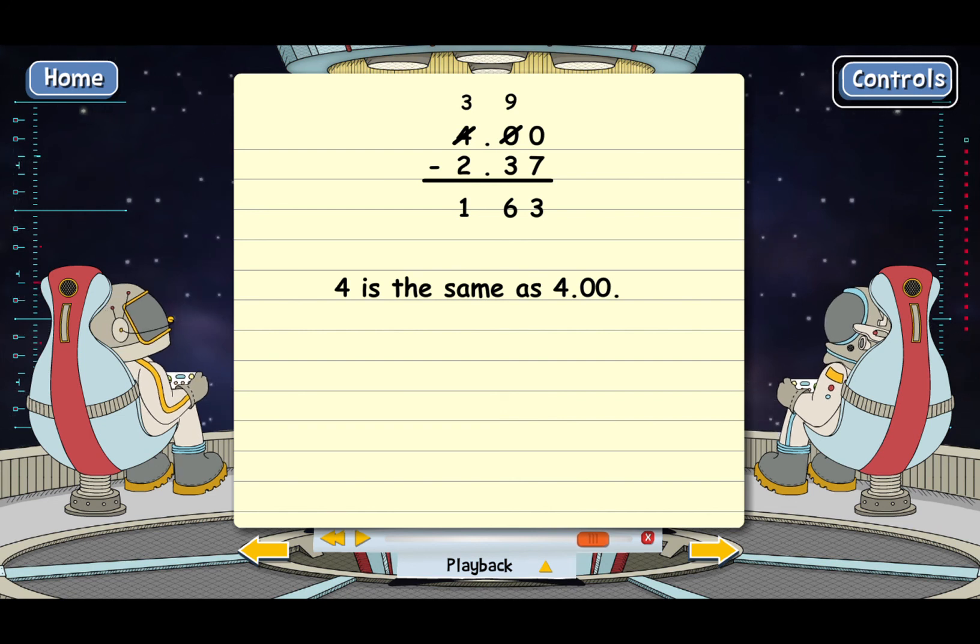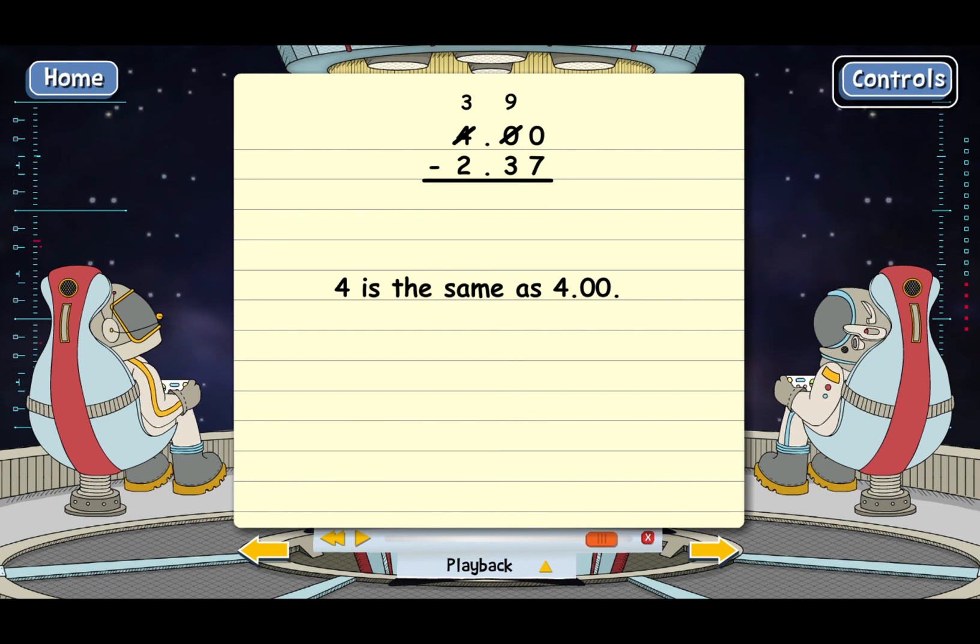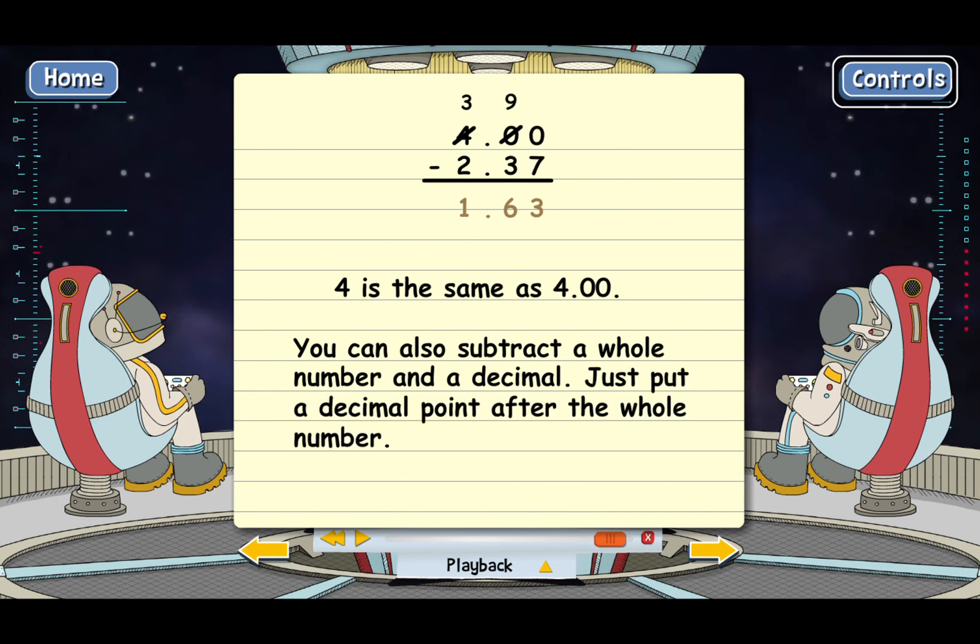And you know that the decimal point goes directly below the points in the numbers that we subtracted. So it goes between the 1 and the 6. The final answer is 1.63 miles. That's how many more miles Jill walked. But the main point of this last example is that you can also subtract a whole number and a decimal. Just put a decimal point after the whole number. Then if you need to, put in extra zeros to fill in the holes.